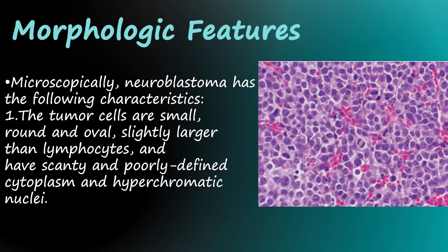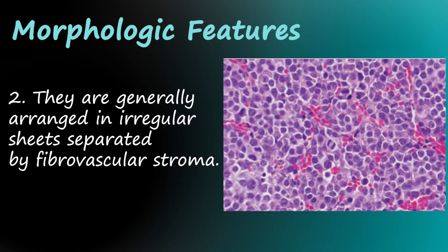Microscopically, neuroblastoma has the following characteristics. First, the tumor cells are small, round and oval, slightly larger than lymphocytes, and have scanty and poorly defined cytoplasm and hypochromatic nuclei. Second, they are generally arranged in irregular sheets separated by fibrovascular stroma.